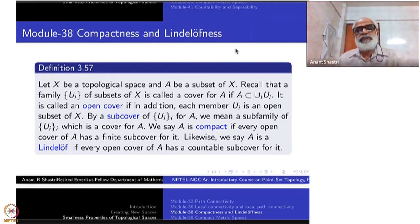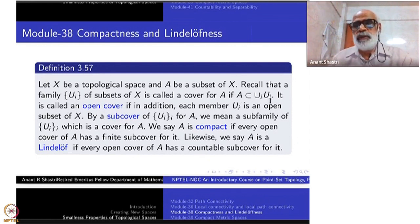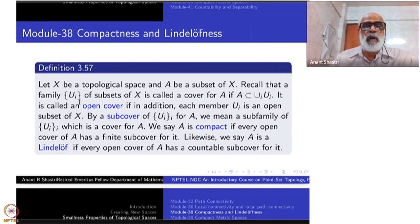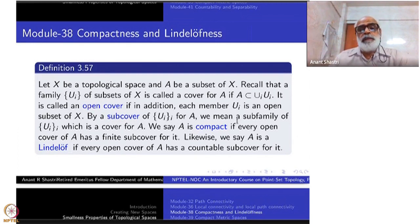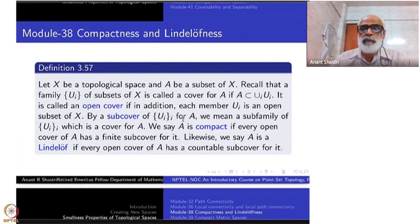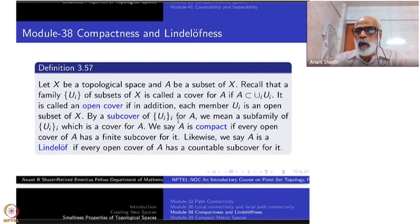A family U_i of subsets of X is called a cover — I think we have defined this earlier, but let us recall. If A is contained inside the union of this family, it is called an open cover if every member of this family, all these U_i's, are open. One can have closed coverings also, but they seem to be not so important. By a sub cover of a family for a given set, first it must be a cover. Then you take a sub-family of U_i's which is also a cover for the same set A. If this sub cover happens to be finite or countable, we say it is a finite sub cover or countable sub cover accordingly.